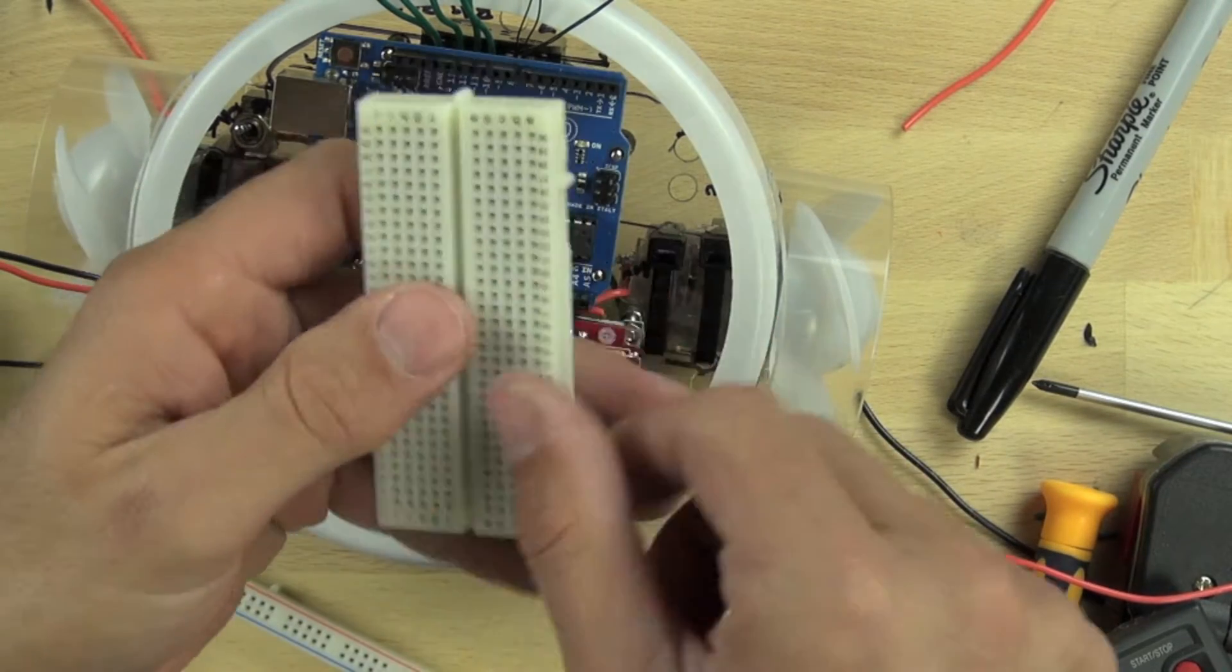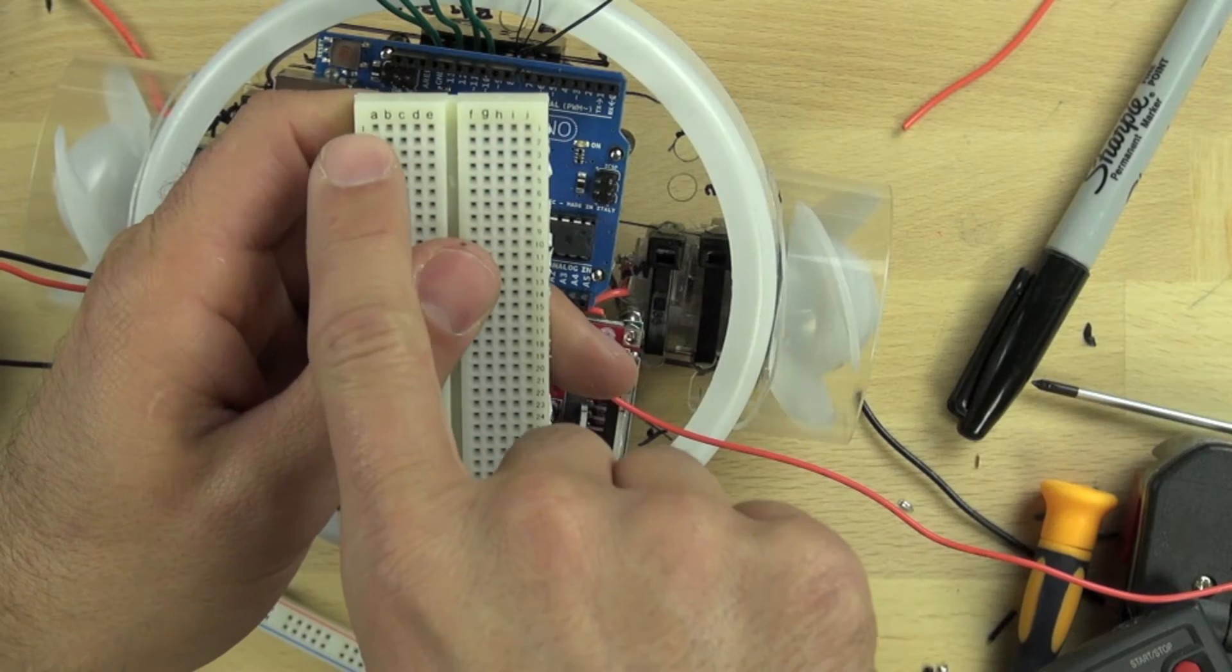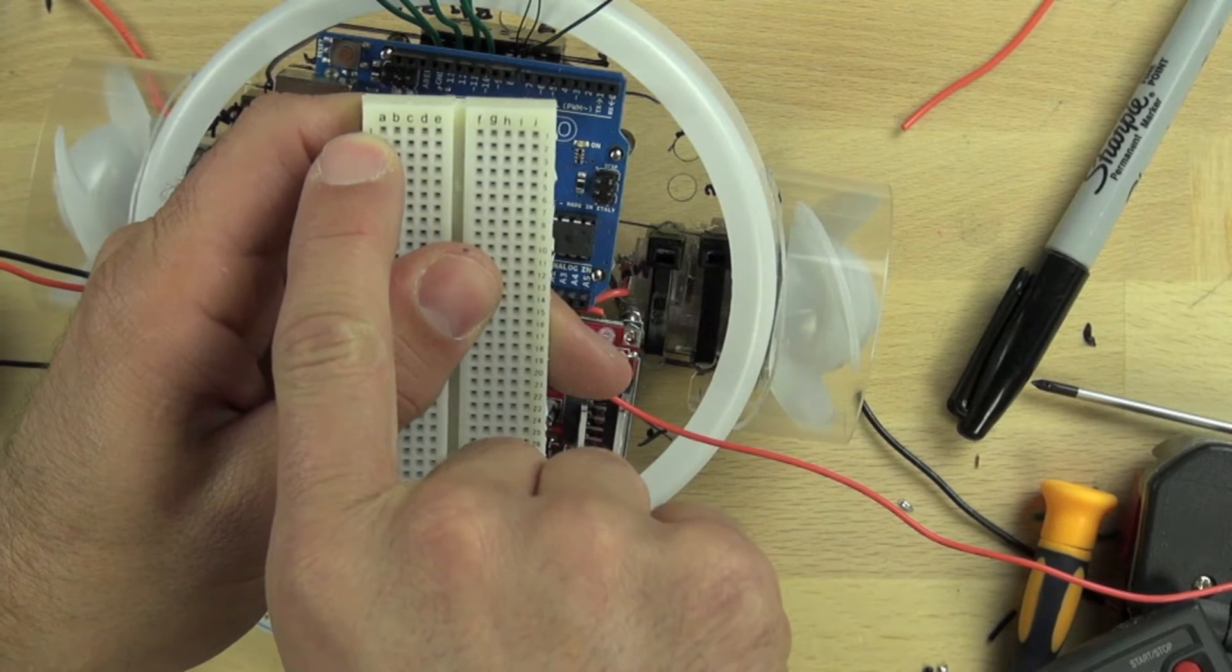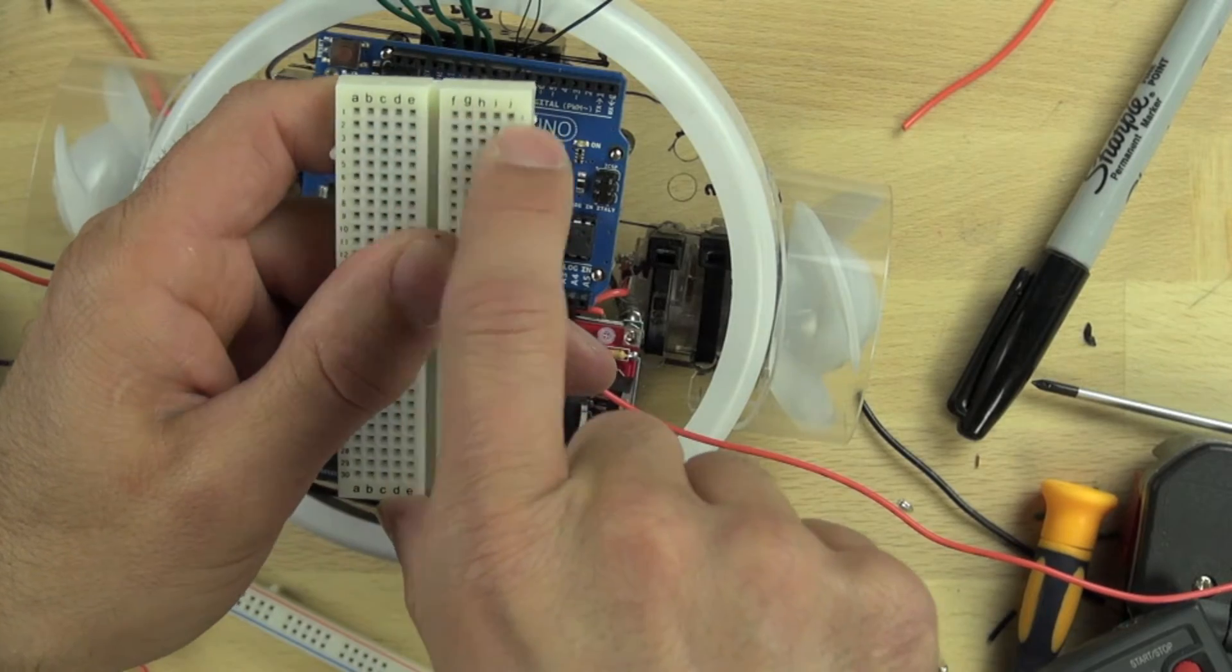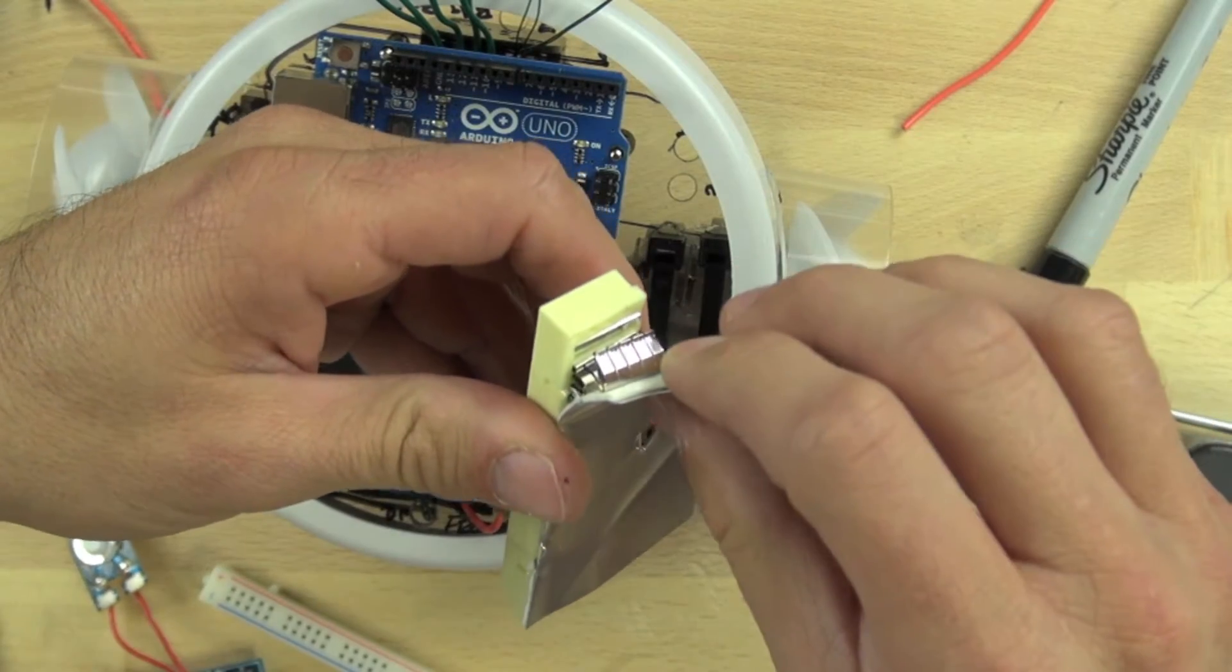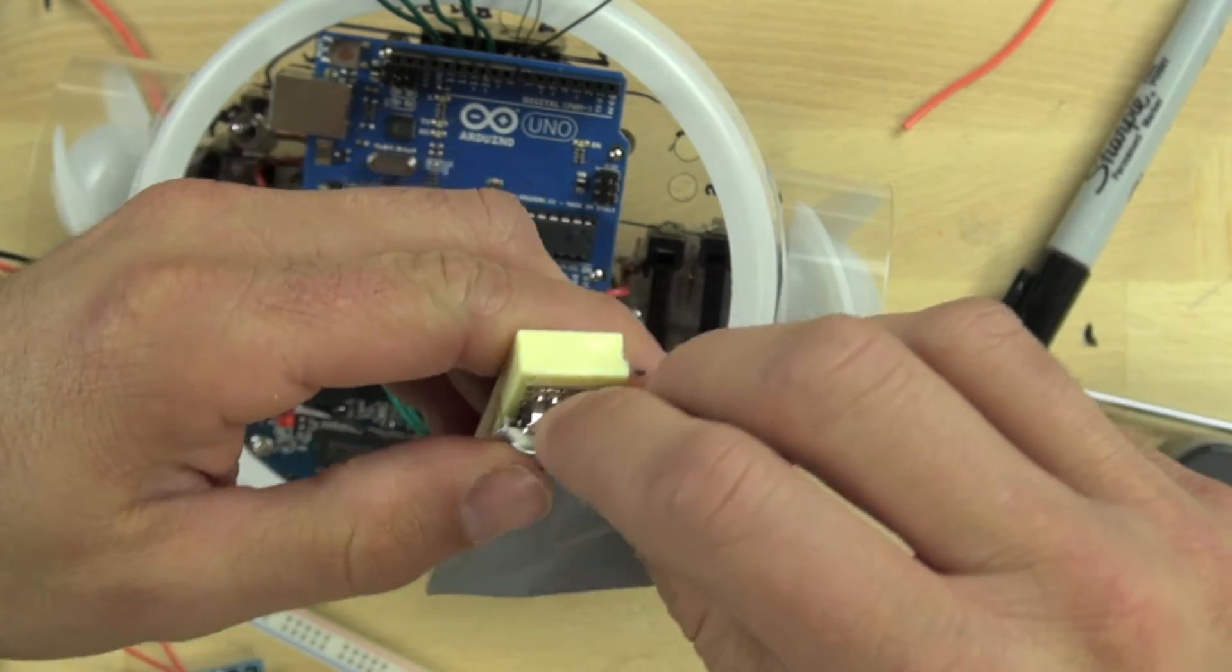And then the difference on this board, of course, and we went over this in our breadboard talk, but the difference on this board is that when you put power in one of these, it powers the row, and it only powers this row, it doesn't power this row. Here are these strips of these little clips, and so they conduct the power all the way across.